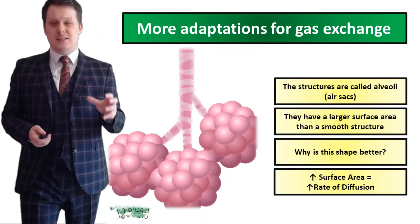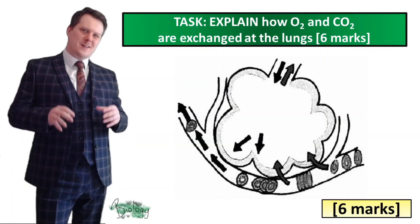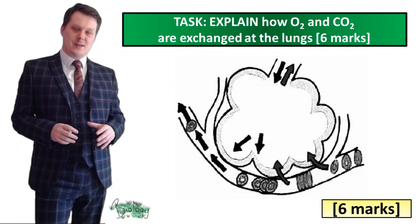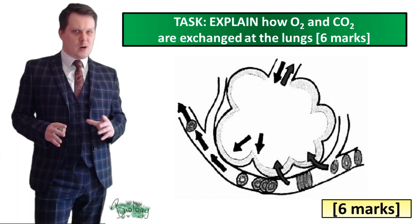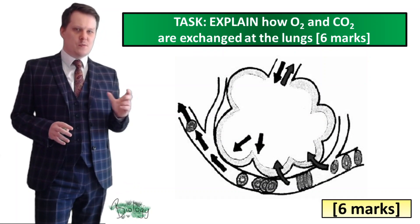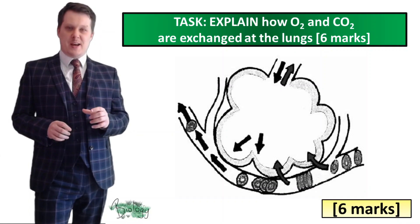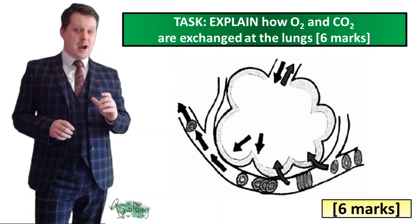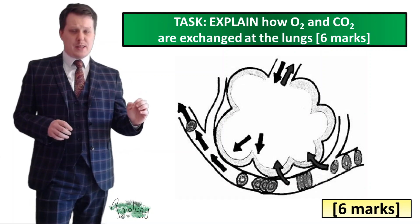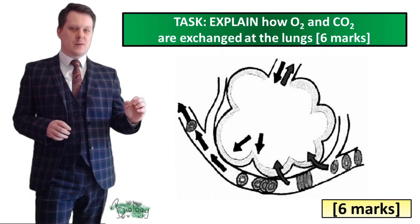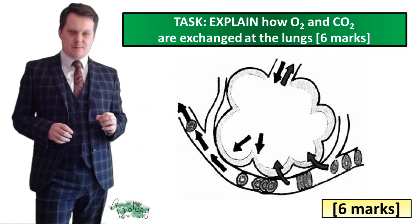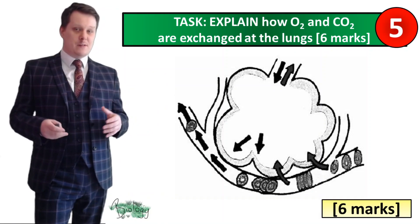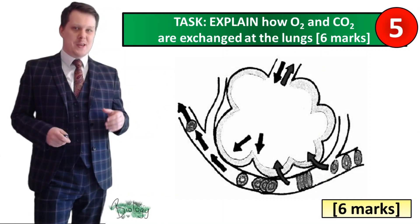I'd like you to explain how oxygen and carbon dioxide are exchanged at the lungs. This question is worth six marks, so split it into two parts: three marks for explaining how oxygen diffuses from the alveoli into the blood, and three marks for explaining how carbon dioxide diffuses from the blood back into the alveoli. Put five seconds on the clock — if you need more time pause the video, and when you're finished we'll go through the answers together.